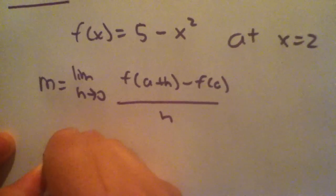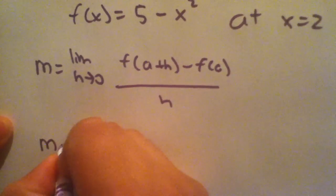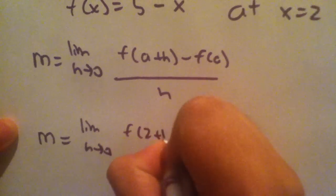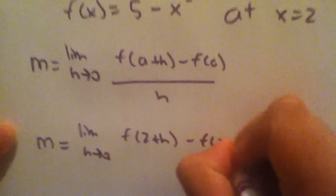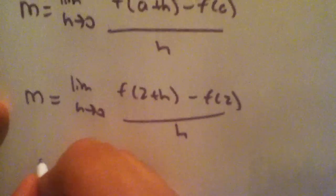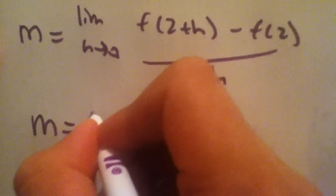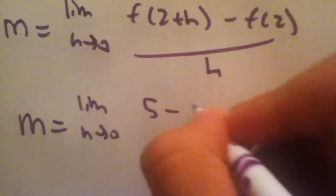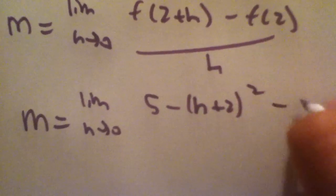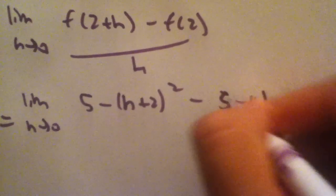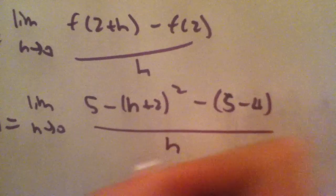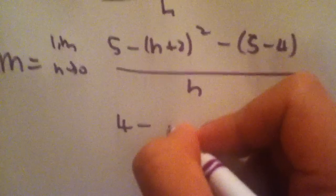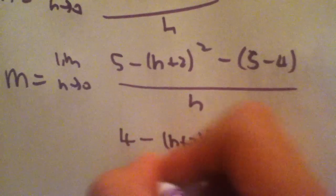Since x equals 2, our a is 2. So it's the limit as h approaches 0 of f of 2 plus h minus f of 2 over h. Expanding, that becomes the limit as h approaches 0 of 5 minus h plus 2 squared minus 5 minus 4, which is 4, over h — which gives us 4 minus h plus 2 squared over h.